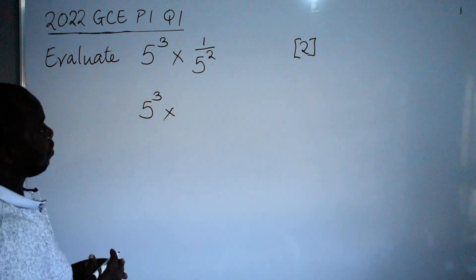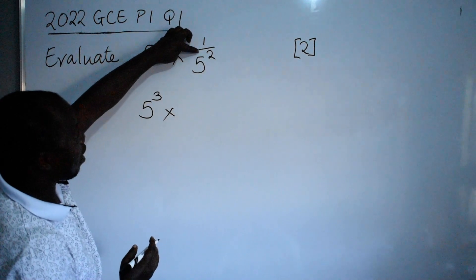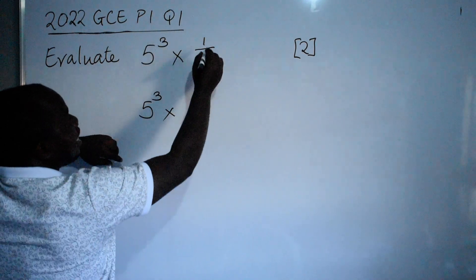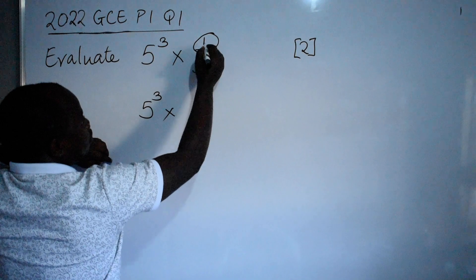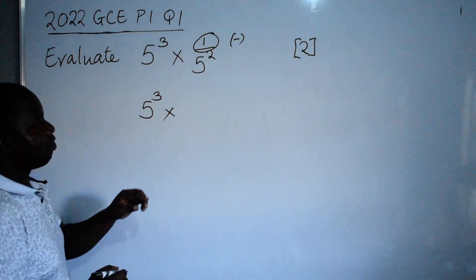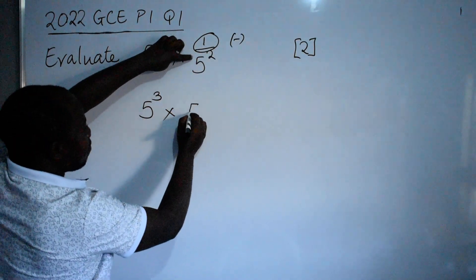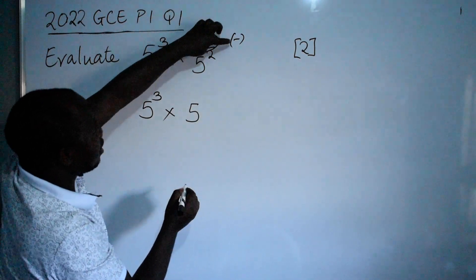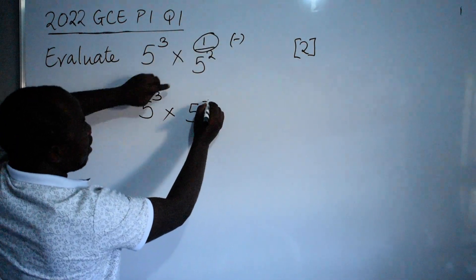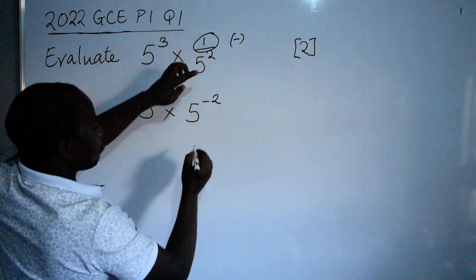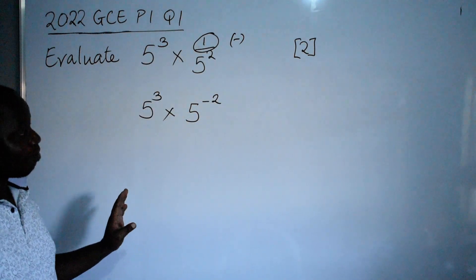According to the laws of indices, when we have 1 over, this is the same as saying negative. So I will say 5, since this 1 over is negative, you write the negative here then to the power 2. I can write it in this form or this form, it's the same.